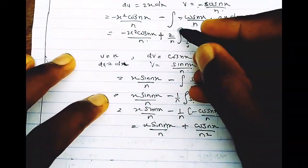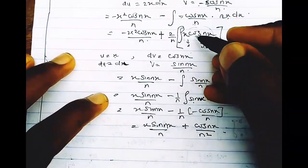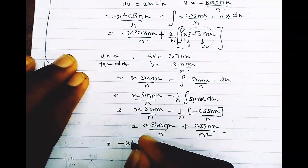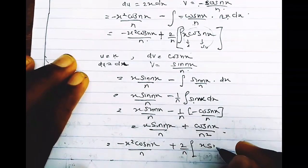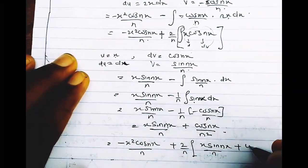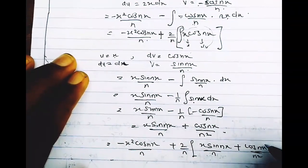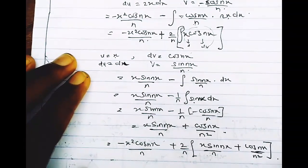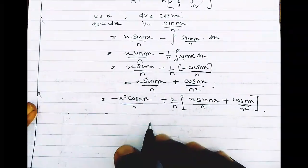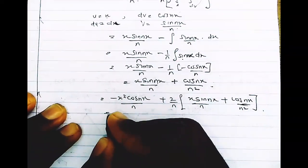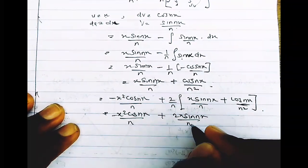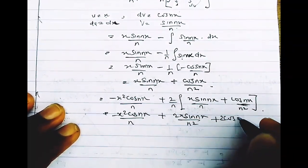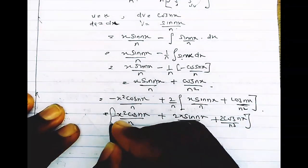Putting the second integration result back, we have: −x²cos(nx)/n + (2/n)[x·sin(nx)/n + cos(nx)/n²]. Multiplying through by 2/n gives: −x²cos(nx)/n + 2x·sin(nx)/n² + 2cos(nx)/n³. Now we apply the limit from 0 to π.